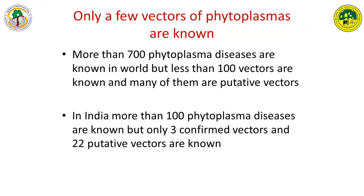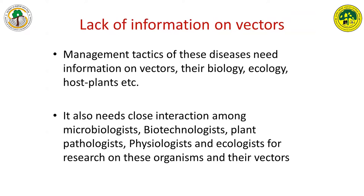One of the most important aspects of management is vector management. It could be direct management, it could be biological control, or it could be modification of the environment so that the vector finds it difficult to survive and its population gets reduced. Without knowing what the vectors of a particular disease are, it becomes very difficult to develop management strategies for these diseases.